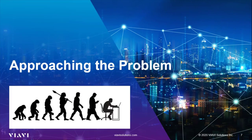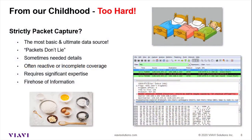Approaching the problem, there are mainly three different ways to use data. Let's think about Goldilocks and the three bears. The first one is Papa's bed — it's a little too hard. That's strictly packet capture. We all know, love, hate, and have used packet capture in the past. That's the ingredients for the recipe. It is the most basic and ultimate data source — because the packets don't lie, and sometimes you need that level of detail. But often you're using it in reactive mode, running around with a packet capture program on a laptop, or you have incomplete coverage because you don't have span or tap points where you need them. It requires significant expertise and can provide a firehose of information — maybe too much information.